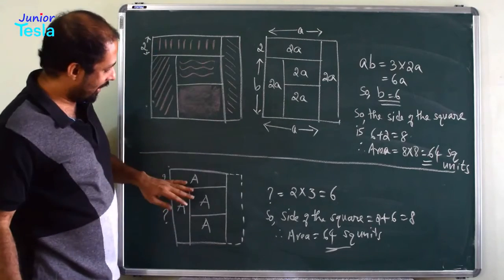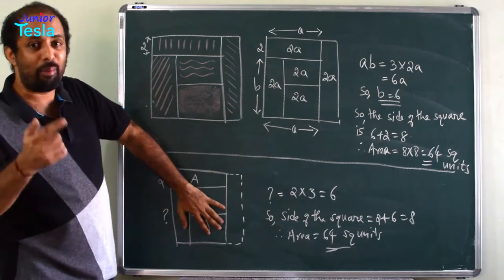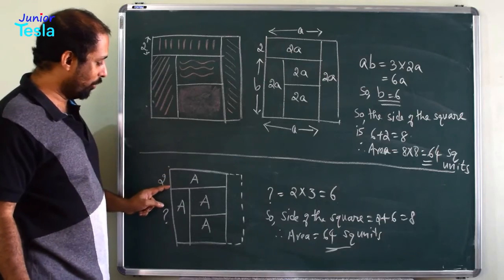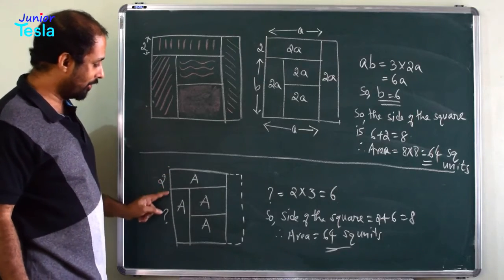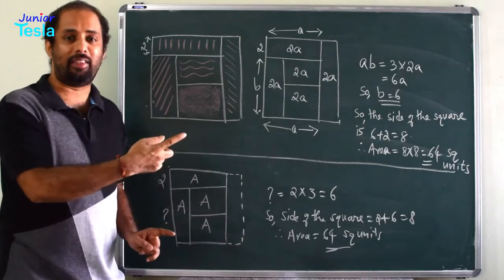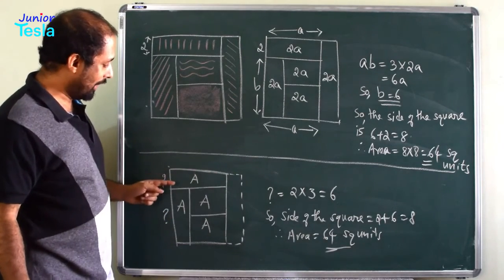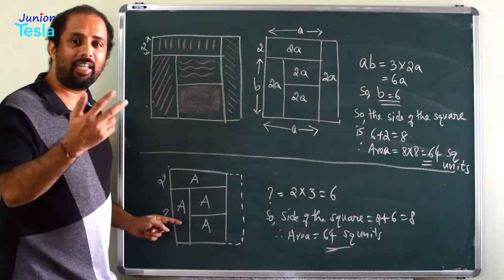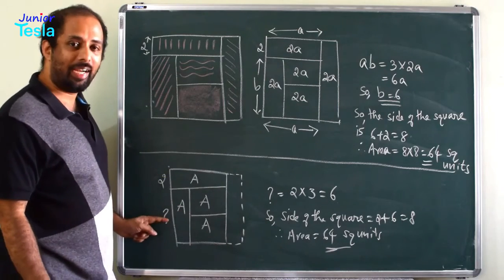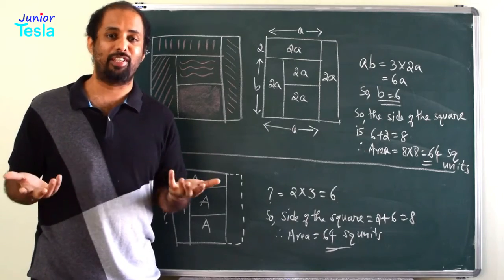So, one has the area A, the remaining, the second region has the area A plus A plus A which is equal to 3A. Now, this has the width 2, therefore, definitely this must have the width 3 times 2 because both of them have the same length, only the width is changing. So, if this has width 2, then this should have width 3 times 2 which is equal to 6. Now, 2 plus 6 is equal to 8, therefore, the total area is 8 square which is equal to 64 square units.